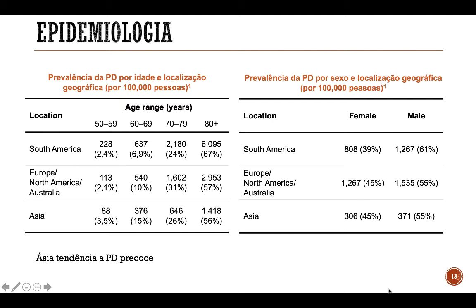Analisando pessoas entre 60 e 69 anos, na América do Sul 6,9% dos pacientes com a doença de Parkinson se encontram nessa faixa etária, enquanto na Europa esse número chega a 10% e na Ásia, 15%. Na faixa de 50 a 59 anos, 2,4% dos pacientes da América do Sul se encontram nessa faixa, comparado a 2,1% na Europa, América do Norte e Austrália, e 3,5% na Ásia. Isso indica que a Ásia tem uma tendência a ter uma doença de Parkinson mais precoce.